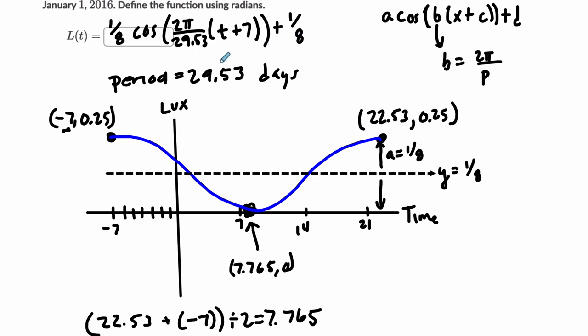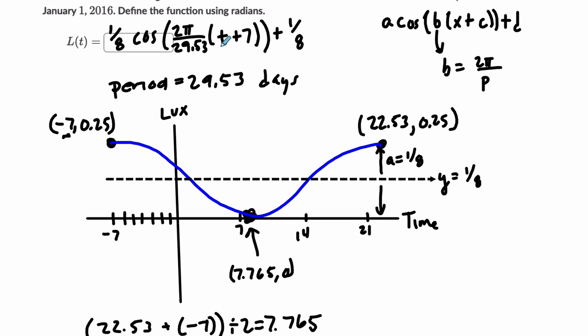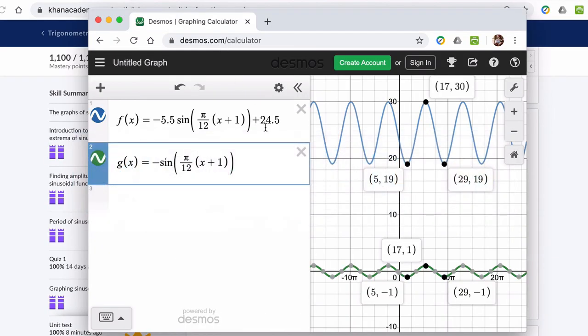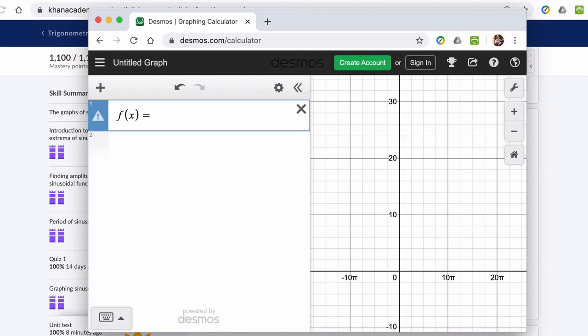And I would actually take time, enter this on Desmos, but use x, and see if you're getting the right inputs and outputs. So let me show you what that looks like, and then we're done. And then, okay, oh, go to this. All right. So if you're trying to check this one on Desmos, what I would probably do is just type this in. I would type in 1 eighth times the cosine of 2 pi over 29.53. That's 6, 3, 5, 5, 3, parentheses, x plus 7 plus 1 eighth.